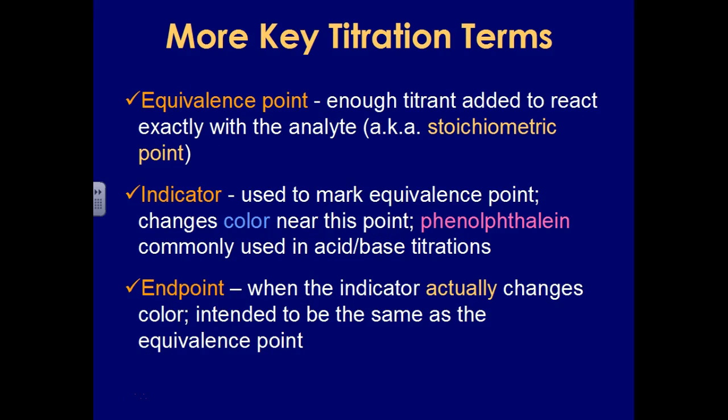What we were measuring when the color turned pink was basically where the equivalence point was. We want to try to add just enough base to neutralize the acid, the analyte, or whatever is in your Erlenmeyer flask with what's in your burette, your titrant. And that's also known as the stoichiometric point.